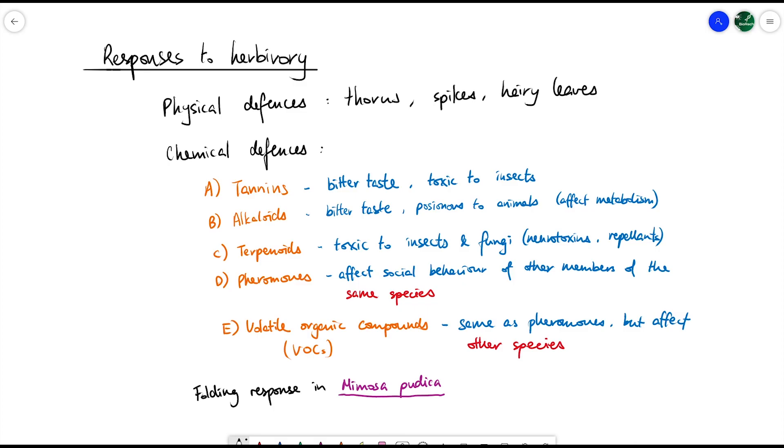Here are the different plant responses against herbivory: physical defenses and five chemical defenses. These either make the plant taste disgusting, are toxic or poisonous, affect physiological responses, or release chemicals affecting social behavior to warn others. A special example is Mimosa pudica, which folds its leaves when touched to scare herbivores or make insects slide off.